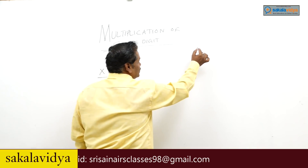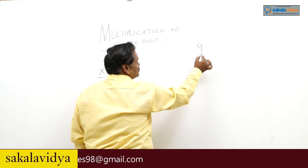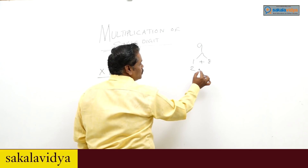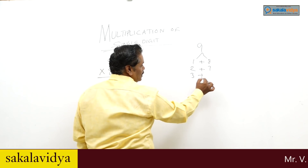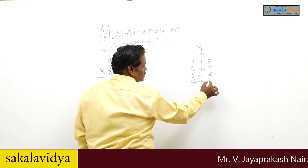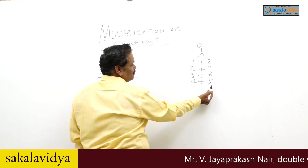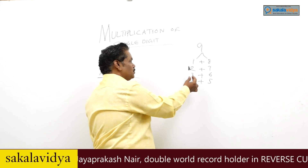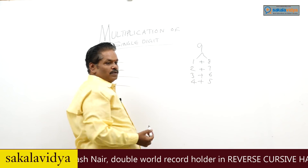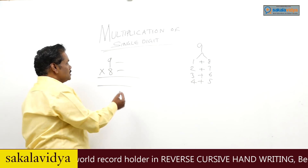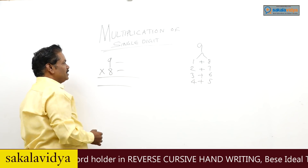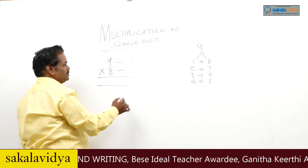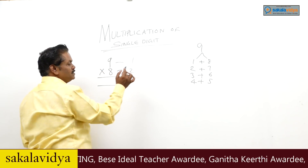Once again I will revise. The 9 complements: 1 plus 8, 2 plus 7, 3 plus 6, 4 plus 5, 5 plus 4, 6 plus 3, 7 plus 2, 8 plus 1, that is 9. So complement of 9 is 1, and complement of 8 is 2.